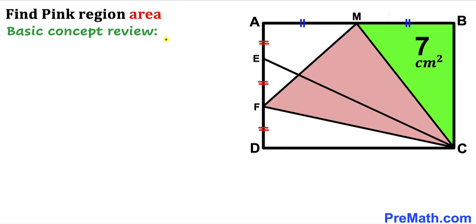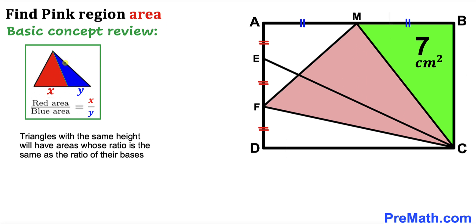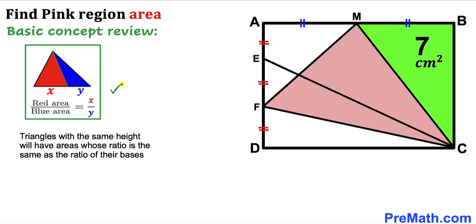Before we proceed, let's go over the basic concept. Triangles with the same height will have areas whose ratio is the same as the ratio of their bases. The base of the red triangle is X and the base of the blue triangle is Y, and the height for both is the same. So the ratio of the red area to the blue area equals the ratio of X to Y. We will use this concept to solve the problem.